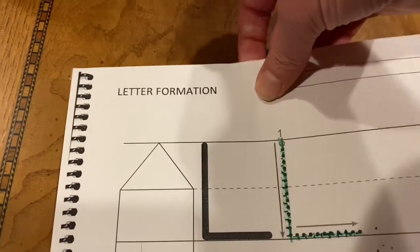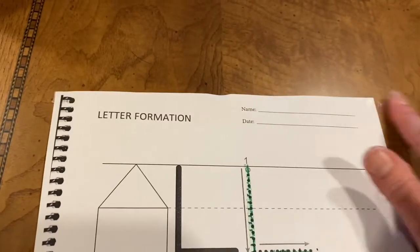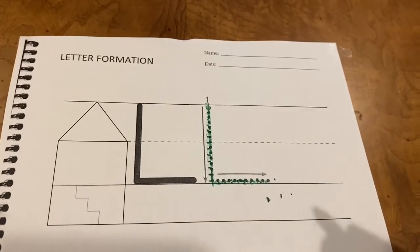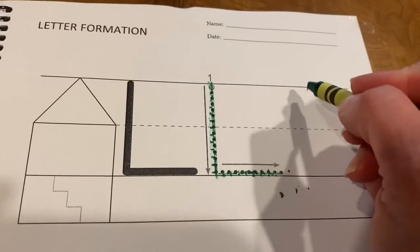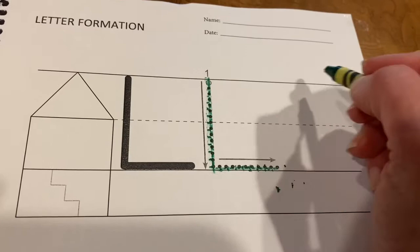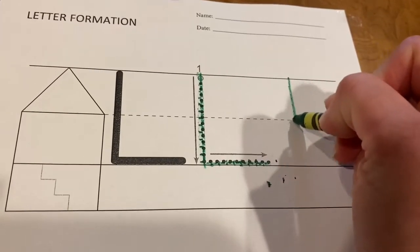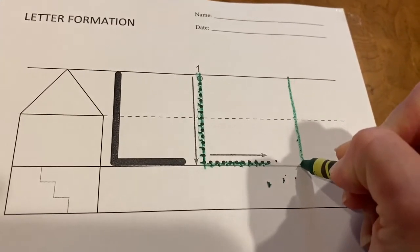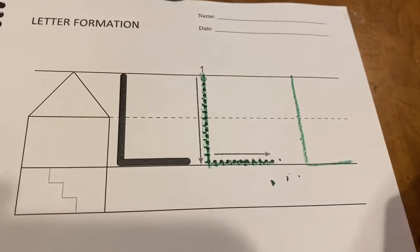Now you can take out your bumpy screen and you're going to practice writing one uppercase L. Start at the top, come down to the bottom, and then across on the bottom line.